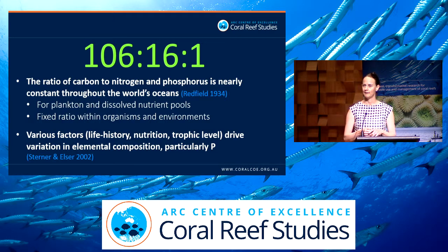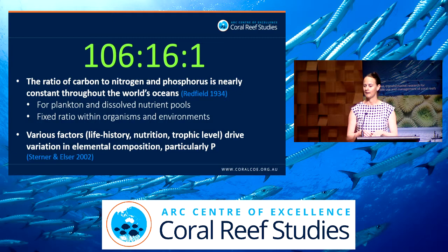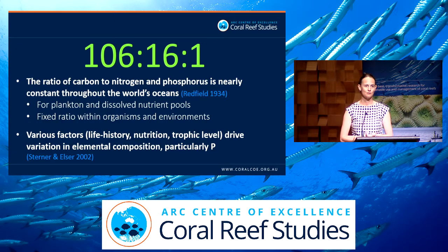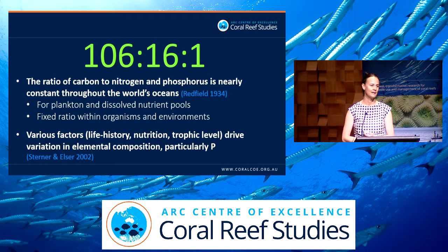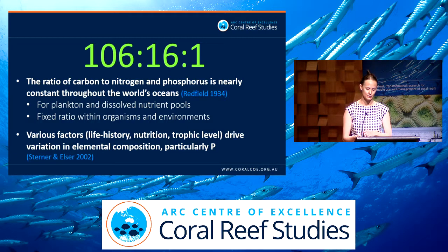More recently there's been development of a field called ecological stoichiometry, which is really exploring the causes and consequences of variation in elemental composition in body tissues. This field recognises that lots of factors like life history traits, nutrition, and trophic level lead to variation in elemental composition. In particular, phosphorus is highly variable in the tissues of organisms. That's what I'll be talking to you about today — some of the hypotheses trying to explain this variation in phosphorus in tissues.